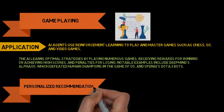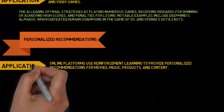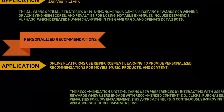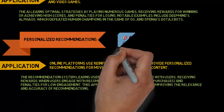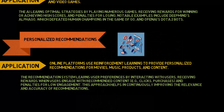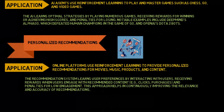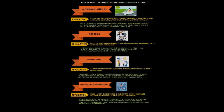Online platforms use reinforcement learning to provide personalized recommendations for movies, music, products, and content. The recommendation system learns user preferences by interacting with users, receiving rewards when users engage with recommended content and penalties for low engagement. This approach helps in continuously improving the relevance and accuracy of recommendations. These implementations showcase the versatility and power of reinforcement learning algorithms in solving complex real-world problems by enabling systems to learn and adapt through interactions with their environments.